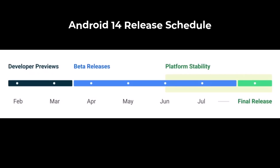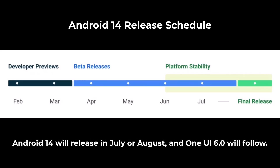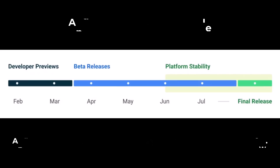Android 14 is going to be officially released towards the end of July or sometime in August, and right after that One UI 6.0 is going to follow. So it's only a couple of months away before we get to see these features.